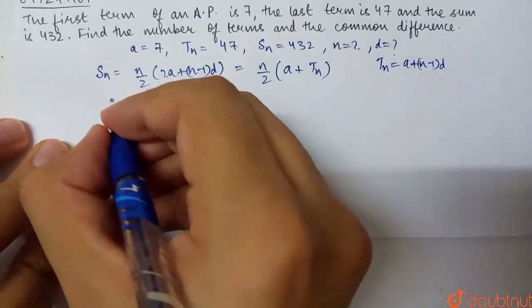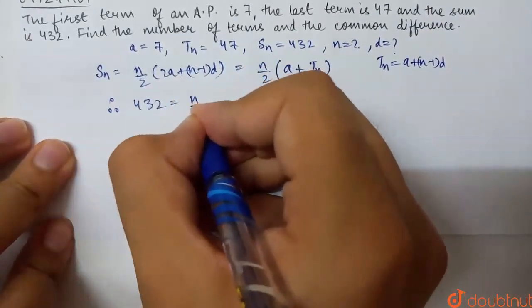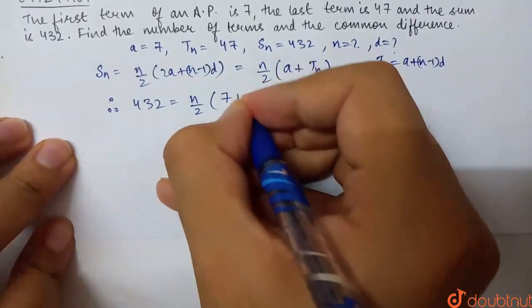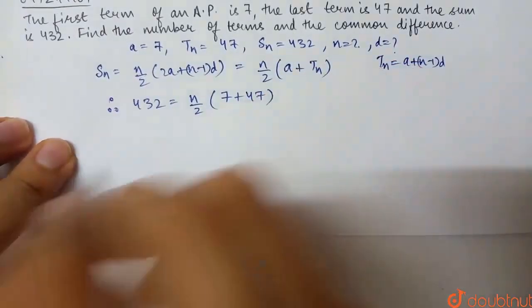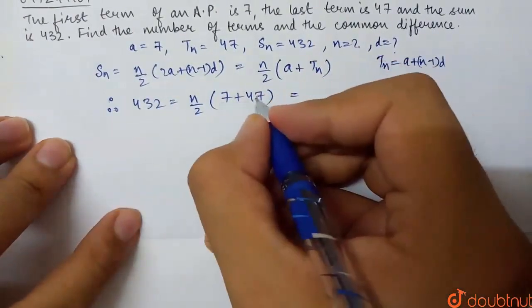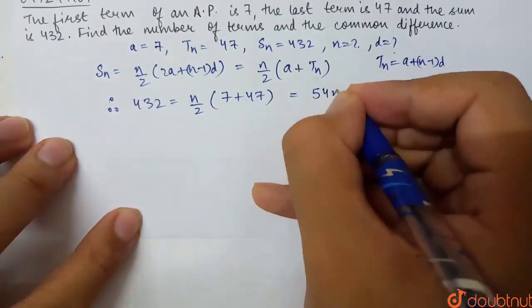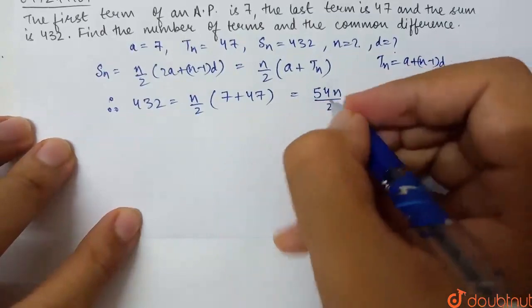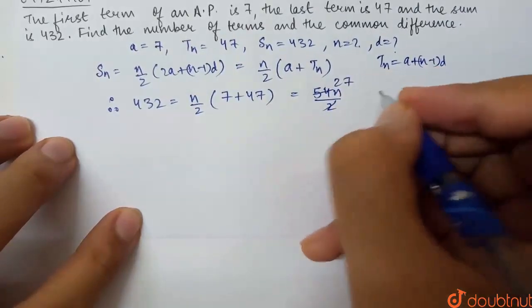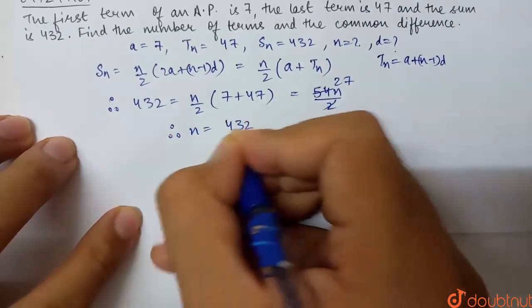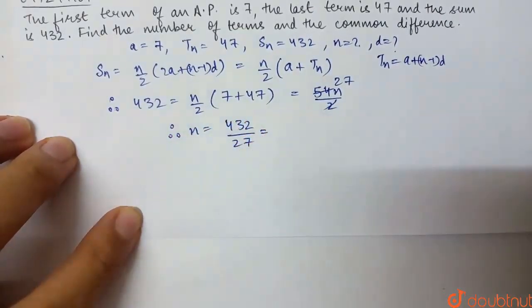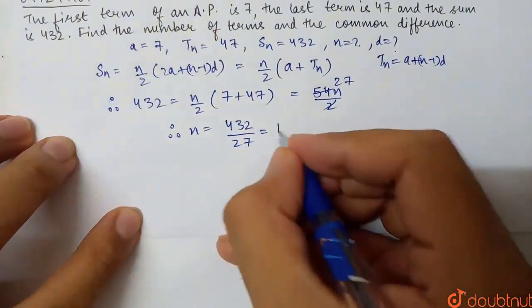Therefore, sum of N terms 432 equals N by 2 into A which is 7, and TN is 47. So 47 plus 7 is 54 times N by 2. If we cancel, we get 27. Therefore, N equals 432 by 27.